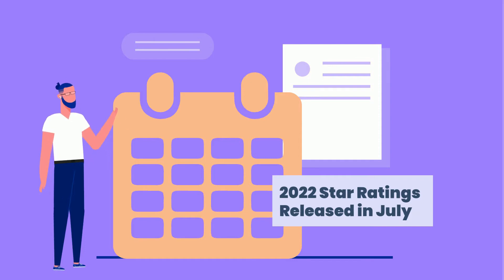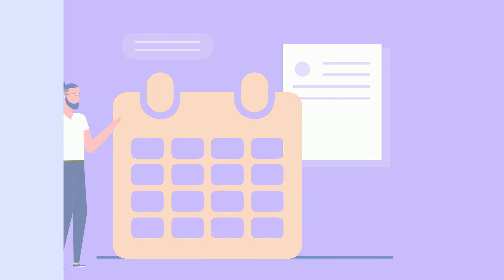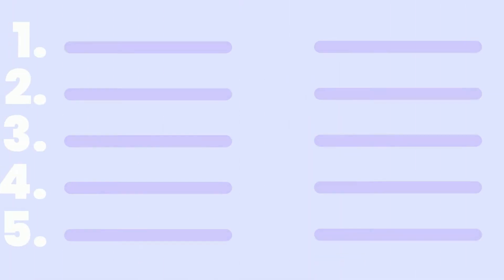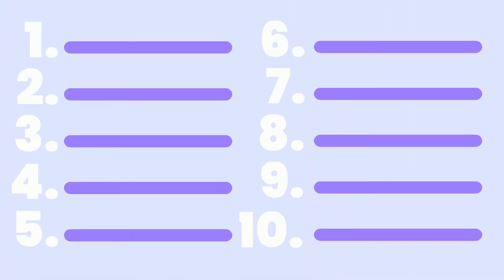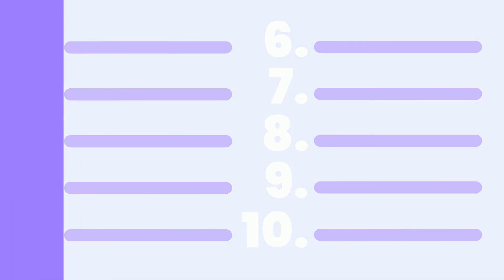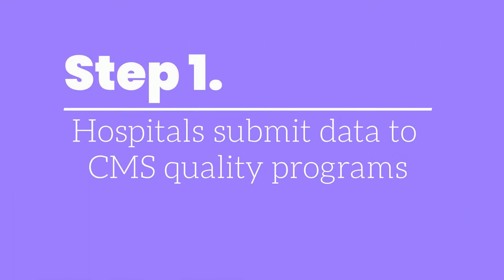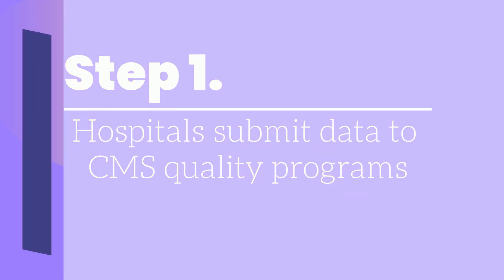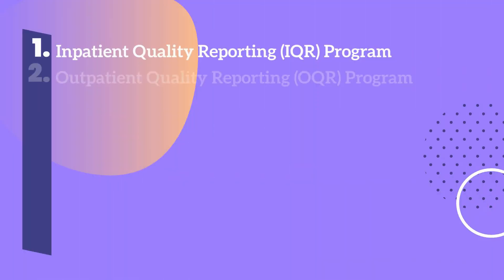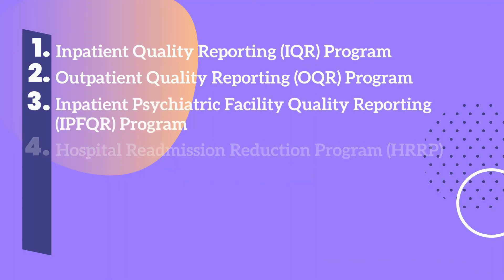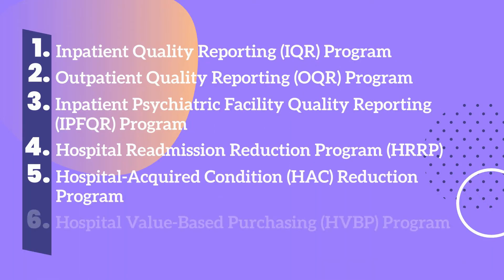The star rating calculation was simplified in 2021 and now is calculated in 10 steps. Step 1: hospitals submit data to CMS quality programs. Hospitals submit measures to meet their requirements for these quality programs you see on the screen. Measures are submitted at various times throughout the year.